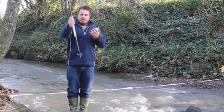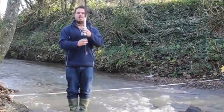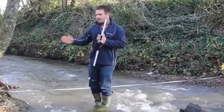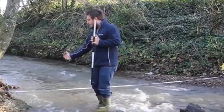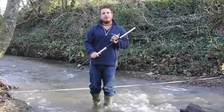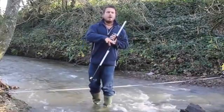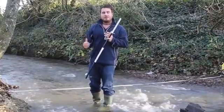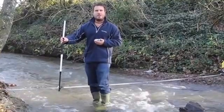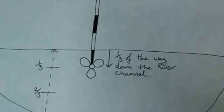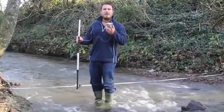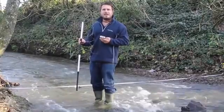With the flow meter, the propeller on the end spins as the water rushes past it and you get a reading in meters per second. Take three readings across your river: a quarter of the way across, halfway across, and three quarters of the way across the channel. Make sure that you or anyone else in the group are not standing directly in front of or behind the flow. Place the flow meter into the river a third of the way down.